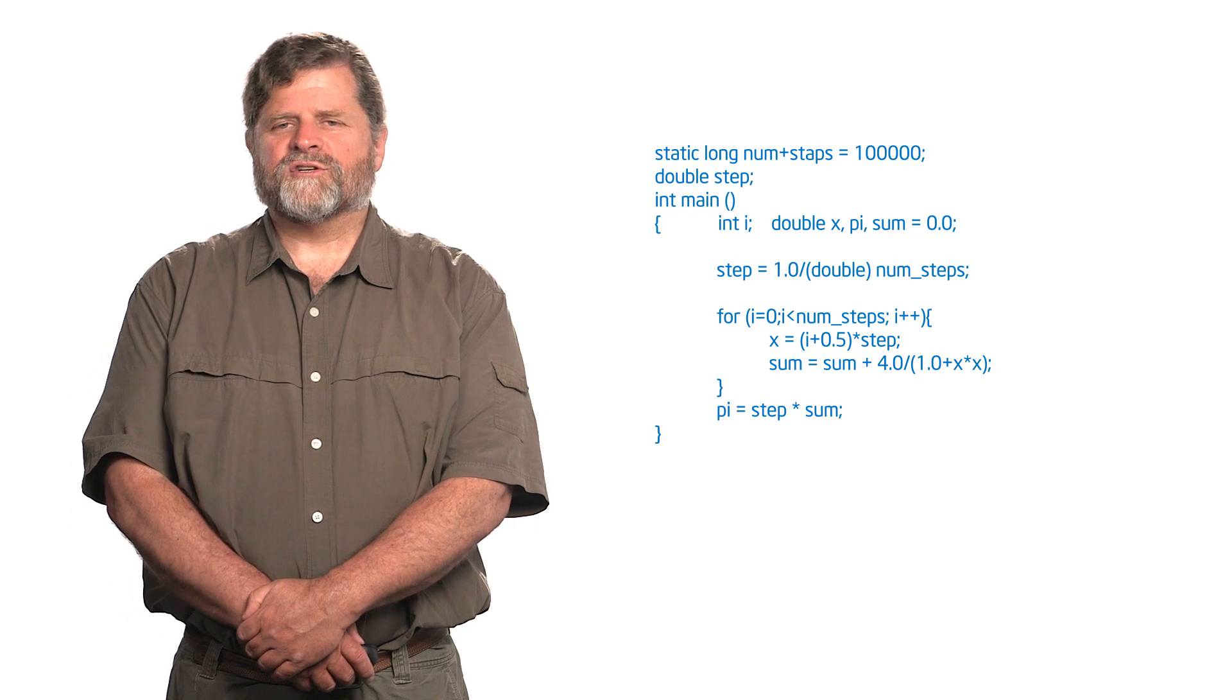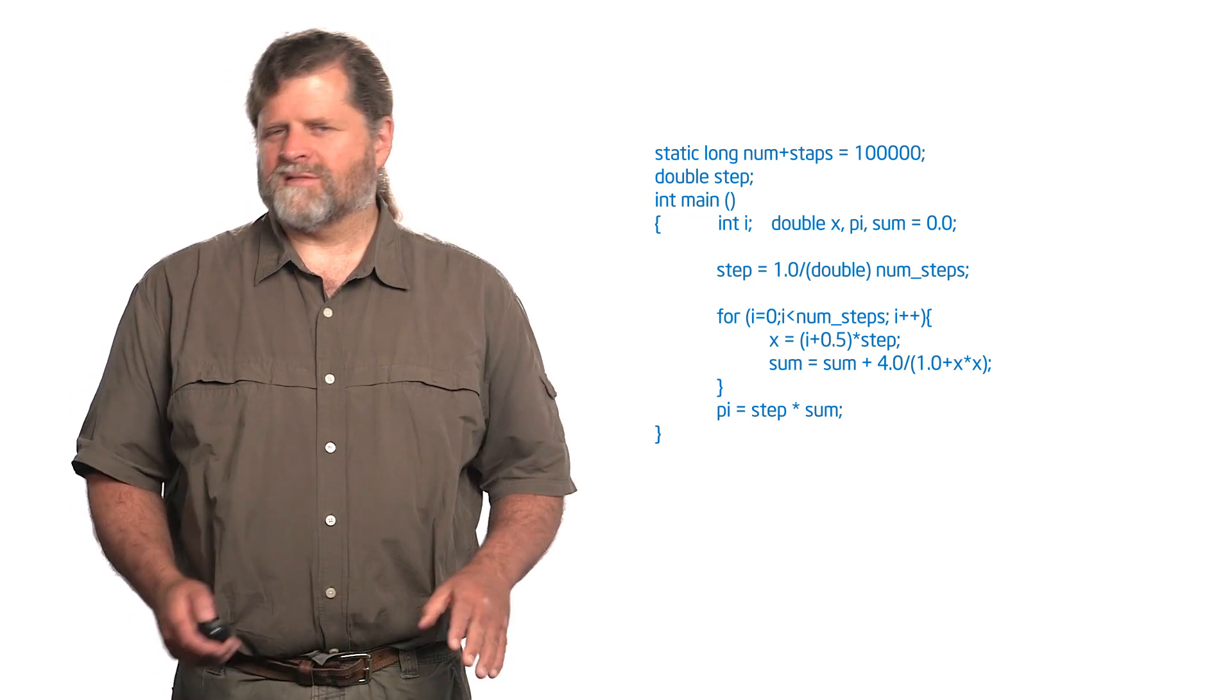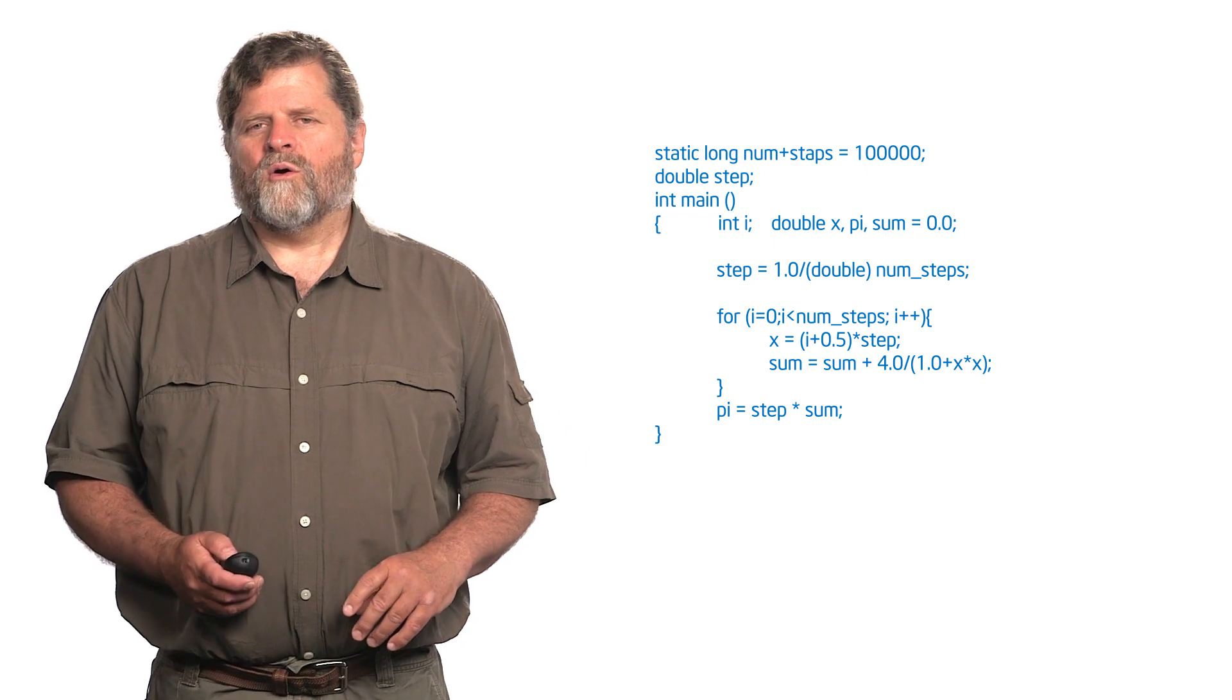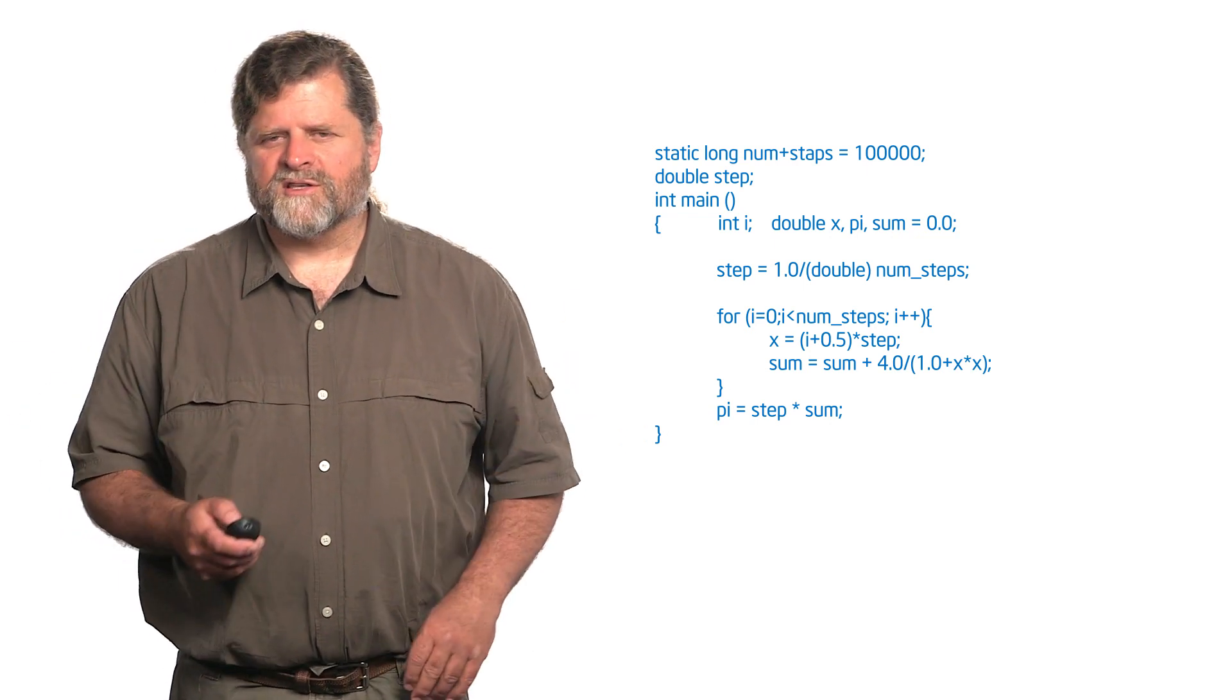So let's discuss what you came up with when you wrote that parallel pi program using the loops construct. This is the serial version of the program that we started with. At this point you're probably getting sick of it, but it's just a simple loop over the integrand as we compute the area of all these rectangles in there.